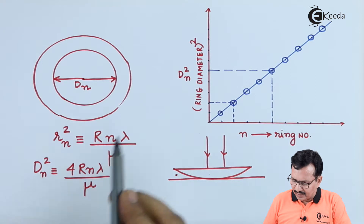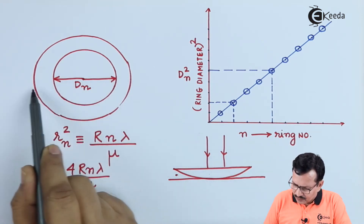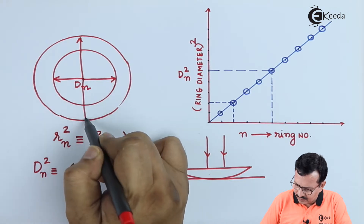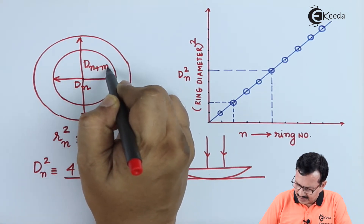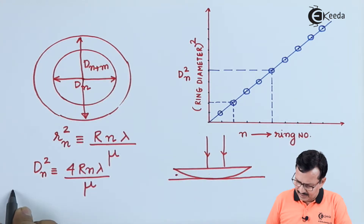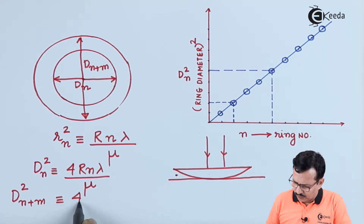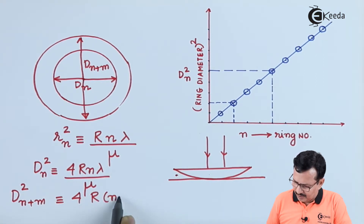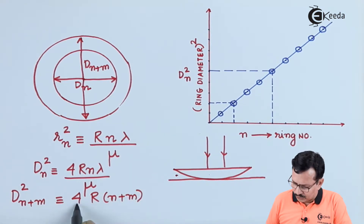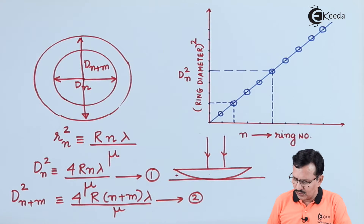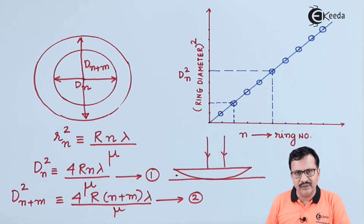Now I consider the diameter of a higher ring. The diameter of the (n+m)th ring, written as d(n+m), satisfies: d(n+m) squared is equal to 4 into R into (n+m) into lambda divided by mu. So I have two expressions: expression 1 gives the diameter of the nth ring, and expression 2 gives the diameter of the (n+m)th ring.